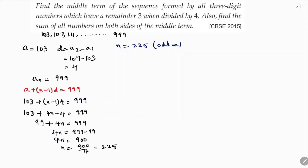When the number of terms is odd, the middle term position is found using (n+1)/2, similar to finding the median in statistics for raw data. So the middle term is at position (225+1)/2.